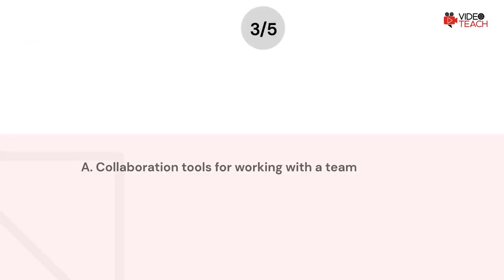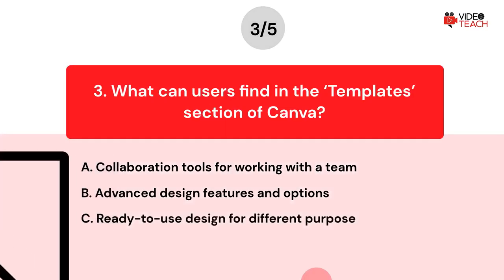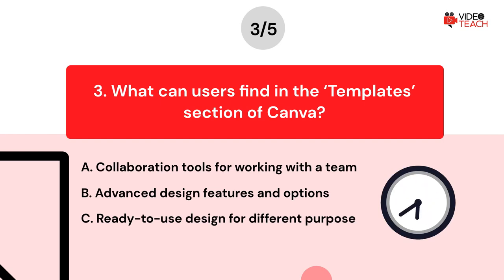Question number three. What can users find in the templates section of Canva? Option A: Collaboration tools for working with a team. Option B: Advanced design features and options. Option C: Ready-to-use designs for different purposes. Now you have about 15 seconds to think about your answer.